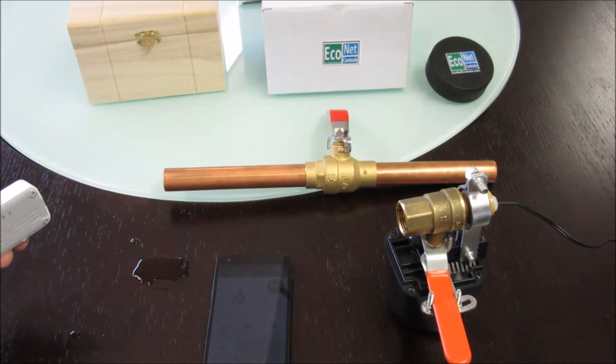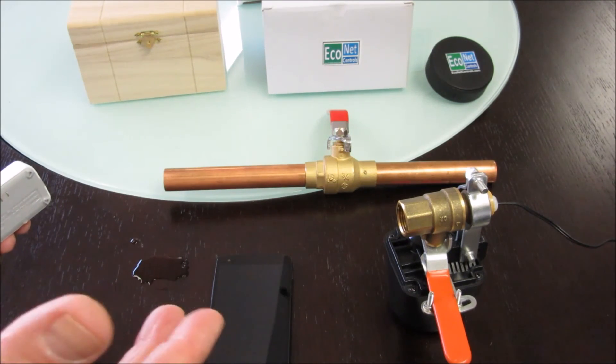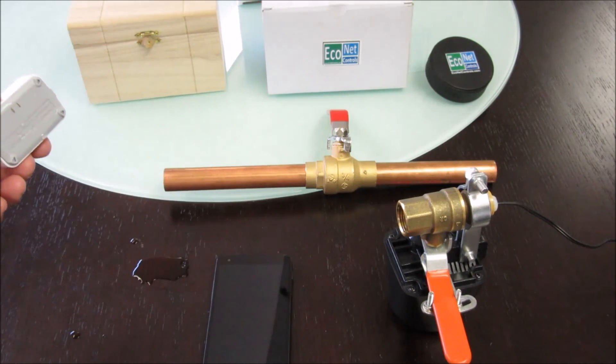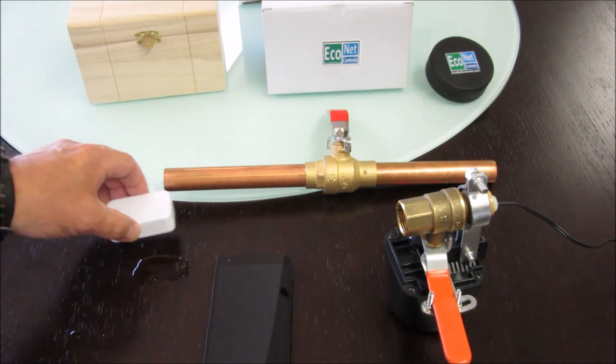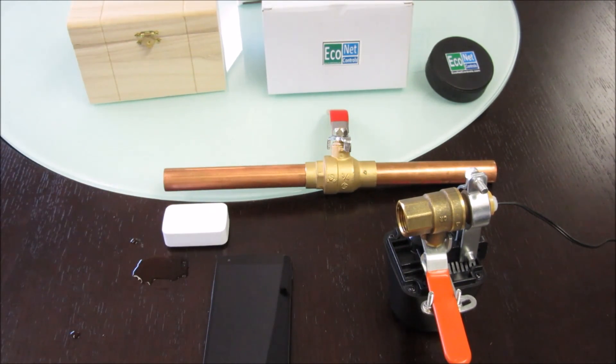So the idea would be that this would be a water leak damage controller. So you set three or four of these around the house, you pair them up with your controller, and if there's any water it shuts the valve and that's it.